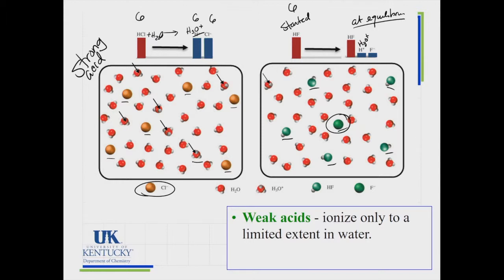I started with six. I finished and I still had five of these and produced one of those and one of those in my image. That is what I mean by ionizing only to a limited extent. Not much of it formed.